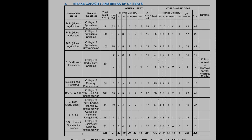Here is the total intake capacity and breakup of seats. There are two types of seats: general seats and cost-sharing seats, plus NRI seats which I'll discuss later. For BVSc & AH, total intake is 100 seats: 15 for VCI, 4 for SC, 5 for ST, 2 for GCH, 2 for PWD, 2 for AFP. The unreserved general seat count is 28, making total general seats 58. The cost-sharing seats total 42.